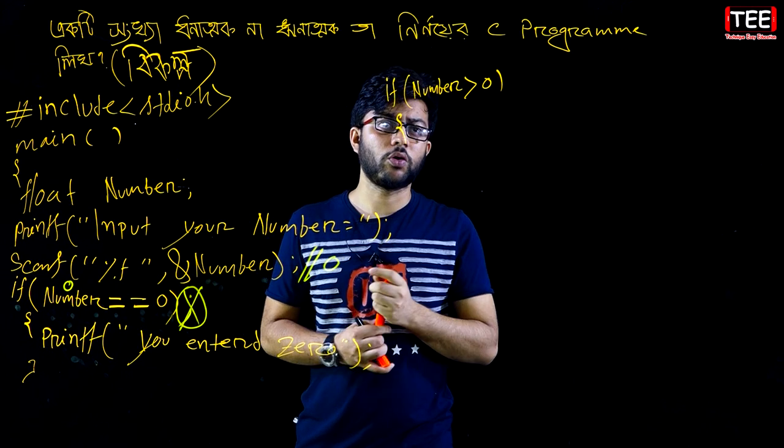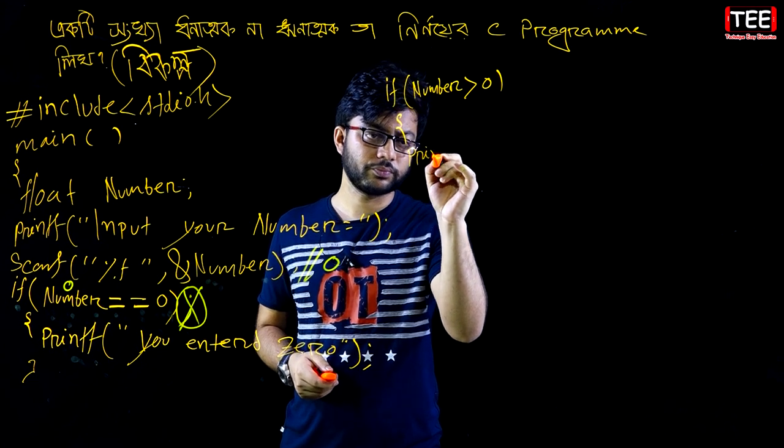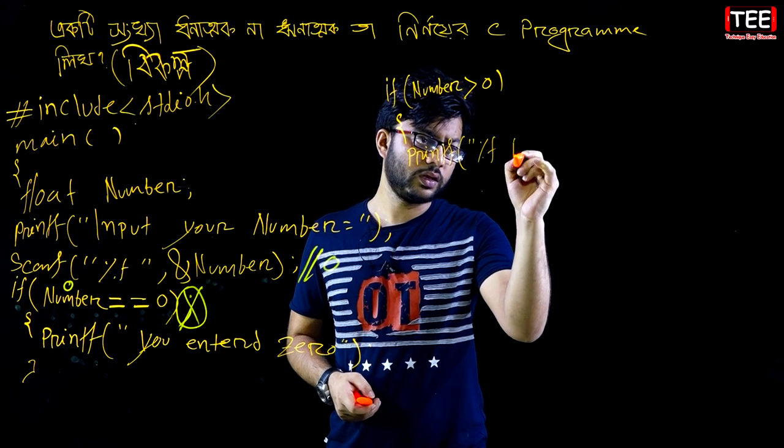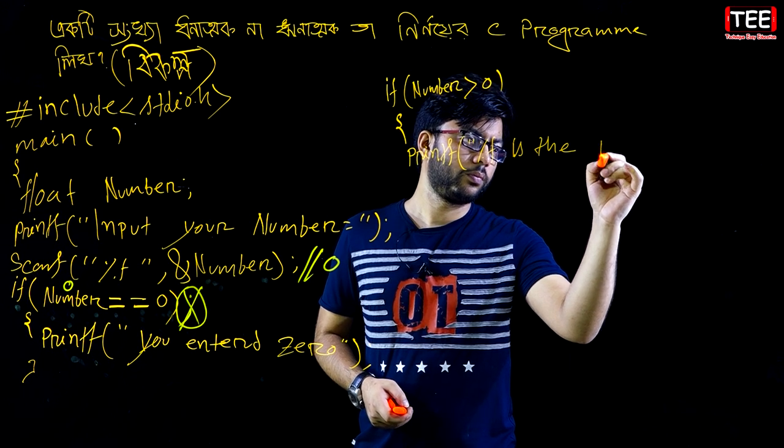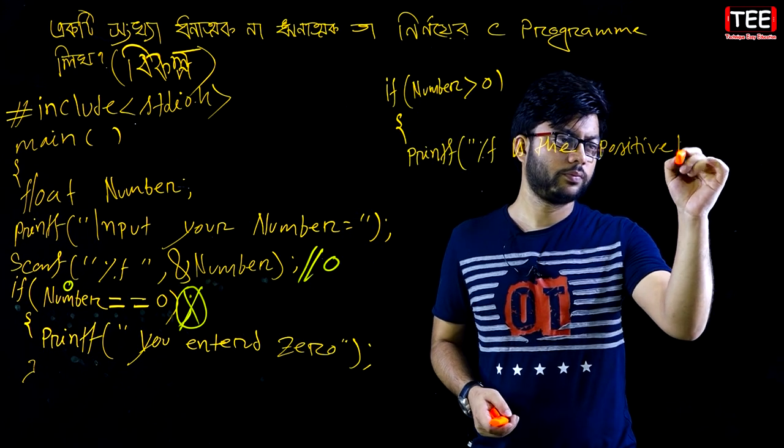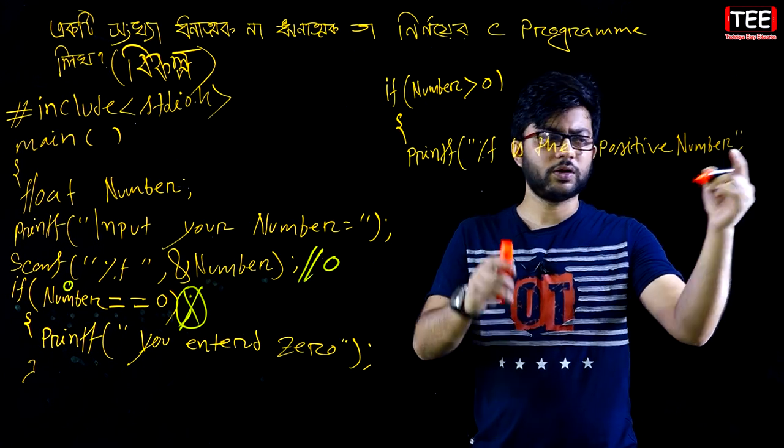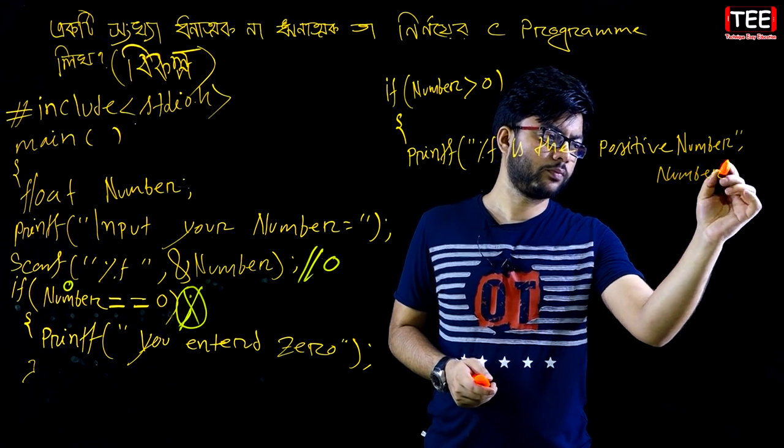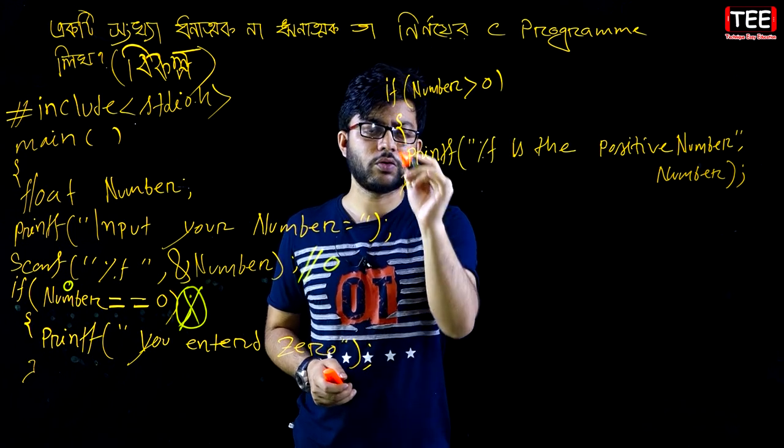If the number is zero, then printf the message: this is the positive number - wait, I mean if the number is positive, printf: this is the positive number.